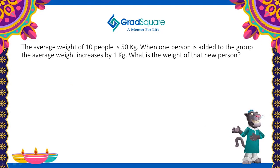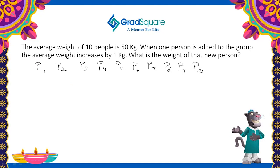Let us see one more example. The average weight of 10 people is 50 kg. When one person is added to the group, the average weight increases by 1 kg. What is the weight of that new person? Let us assume the 10 persons as P1, P2, P3, P4, P5, P6, P7, P8, P9, and P10. According to the first statement, the average weight is 50 kg, so I give 50 kg equally to all the people.